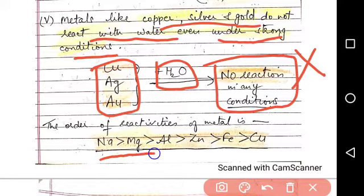So we can conclude that the reactivity order of metals is sodium is more reactive than magnesium, which is more reactive than aluminium, which is more reactive than zinc, then iron and lastly copper.